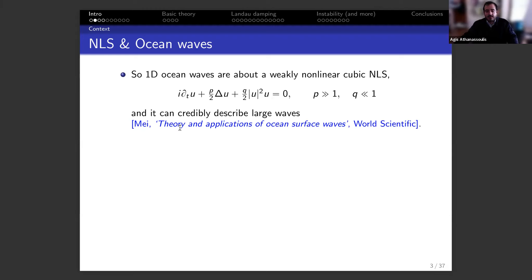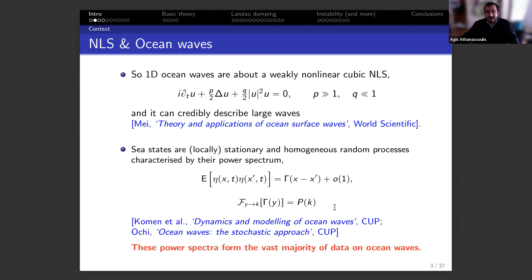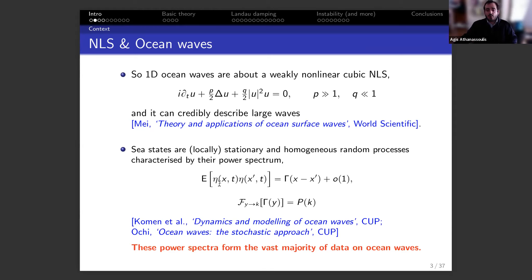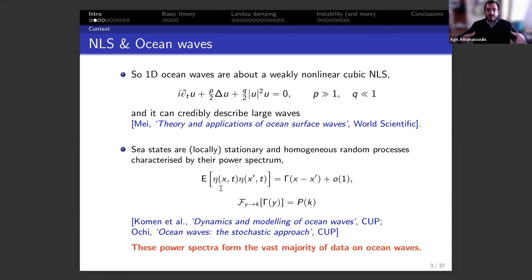This is a well-known textbook on ocean waves: every ocean engineer knows cubic NLS as an approximate model for ocean waves, and every ocean engineer equally knows the linear statistical theory of ocean waves. The sea state is locally a stationary and homogeneous random process characterized by its power spectrum. If you're in the North Atlantic measuring the autocorrelation of the sea surface elevation and then take a transform, you get a power spectrum.